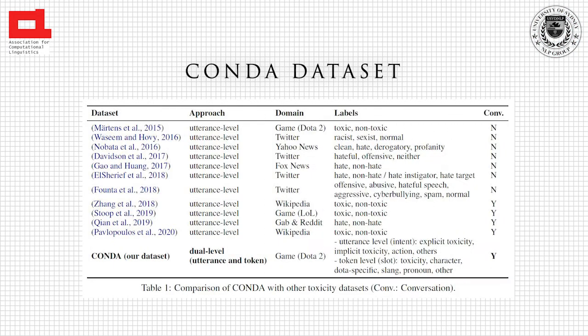Existing hate speech or toxicity datasets mainly focus on annotating at the utterance level. Whereas CONDA conducts a dual-level annotation at utterance and token level based on the conversation history, because understanding the topic of the conversation is crucial for detecting in-game toxicity.